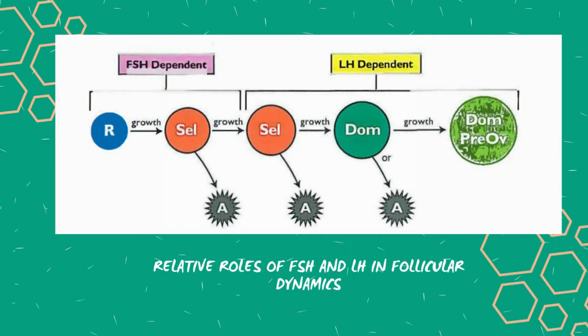Almost all follicles undergo atresia during the cycle because they lack a sufficient number of LH receptors on the granulosa cells to fully respond to LH in the final stages of growth and maturation. Only those follicles with a threshold number of LH receptors will enter the final stages of dominance and gain pre-ovulatory status. In summary, recruited and selected follicles are FSH-dependent, while more mature selected follicles, dominant follicles, and pre-ovulatory follicles are LH-dependent.